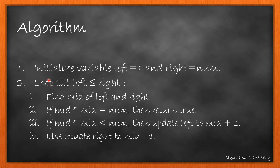We will use a divide and conquer approach for this problem. We will initialize variable left to 1 and right to num, and loop till left is less than or equal to right. We will find the mid of left and right. If its square is equal to num, we return true. If its square is less than num, we update left to mid plus 1, else we update right to mid minus 1.